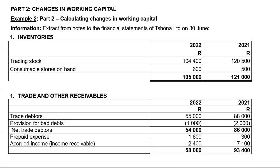When it comes to trading other receivables, remember, trading other receivables relates to current assets — basically, these are current debtors. They currently owe us $58,000 in 2022; in 2021, they owed us $93,400. There is an item that must be disclosed separately on the face of the cash flow statement due to the materiality effect.